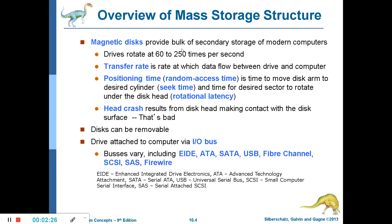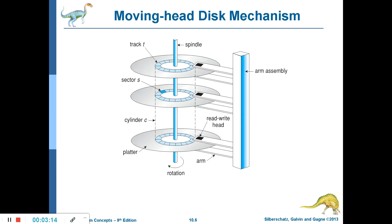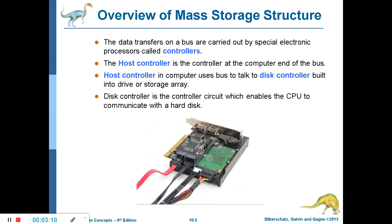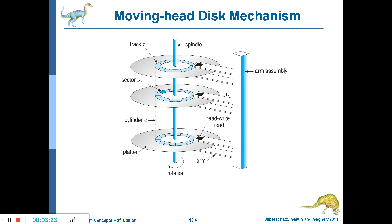Magnetic disks provide the bulk of secondary storage for modern computers. These drives rotate at a speed of 60 to 250 times per second. Transfer rate is the rate at which data flows between the drive and the computer. Positioning time, also called random access time, is the time to move the disk arm to the desired cylinder.